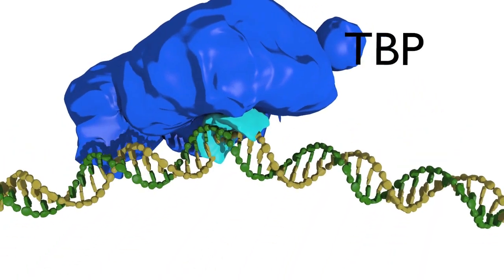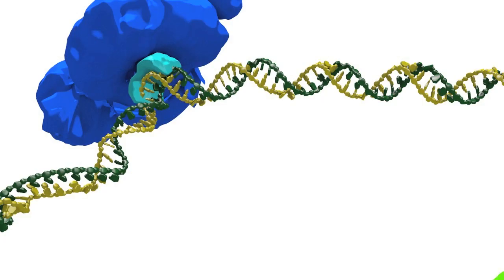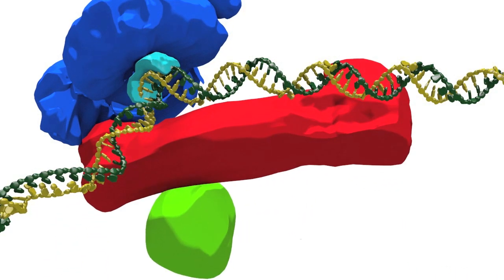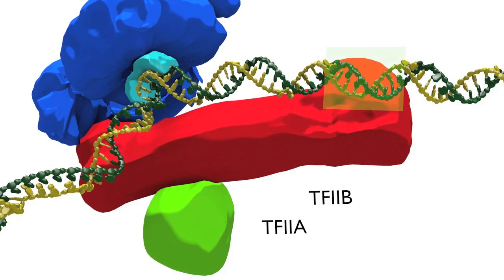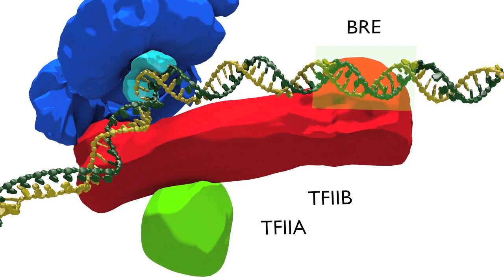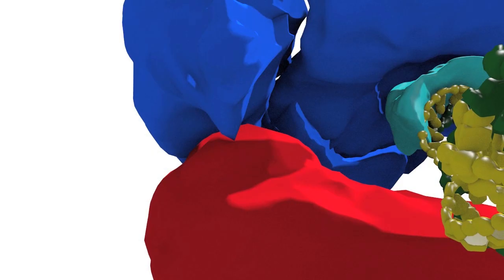The TBP subunit induces profound bending of the DNA. The binding of TF2D is followed by the binding of TF2A and TF2B. TF2B binds to the core promoter element called the BRE, as well as contacting TF2D.